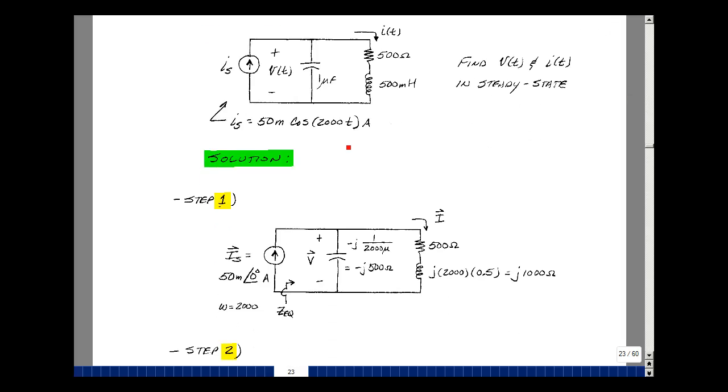We'll take our input and convert it from the time domain to the frequency domain. So you have an amplitude of 50 milliamps at an angle of zero. The frequency is 2,000 radians per second. So let's just jot that down over here.